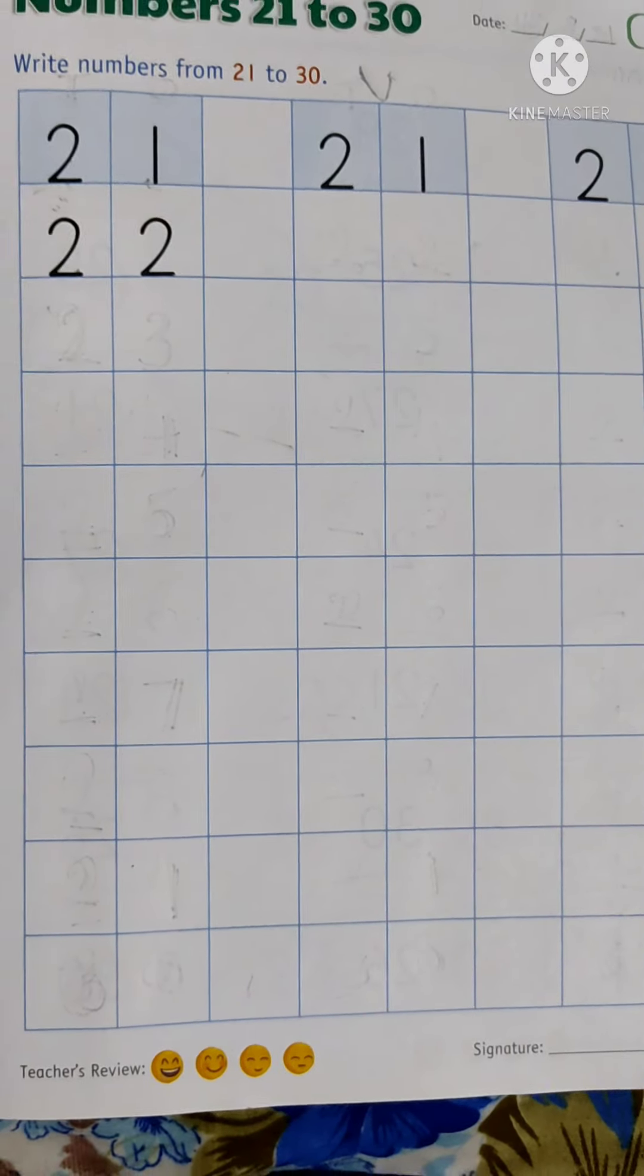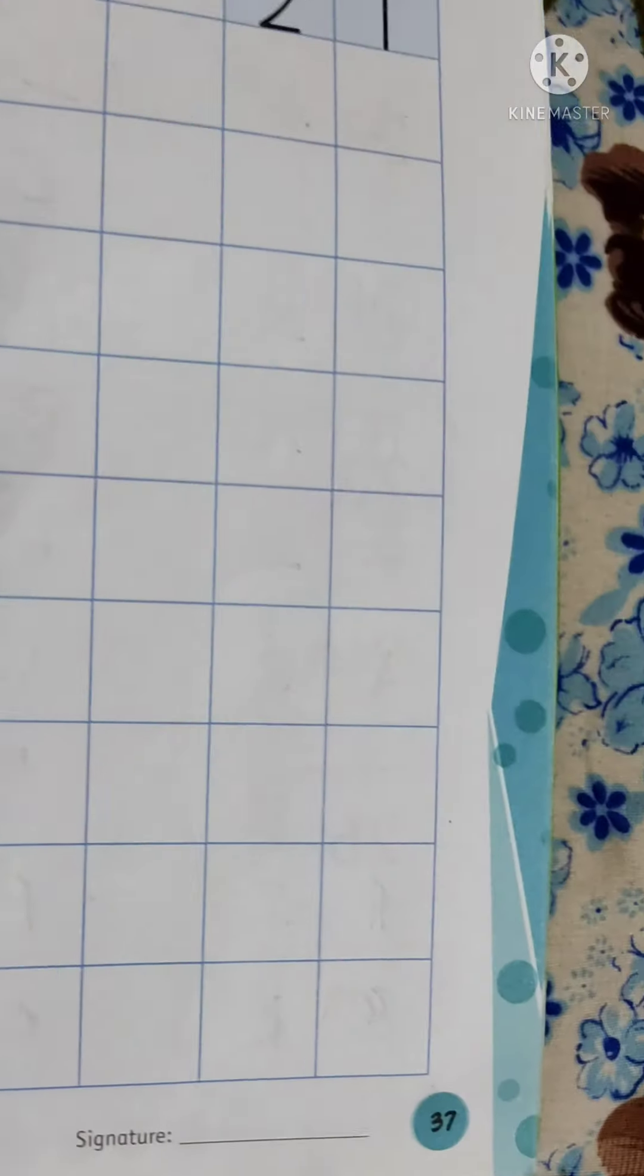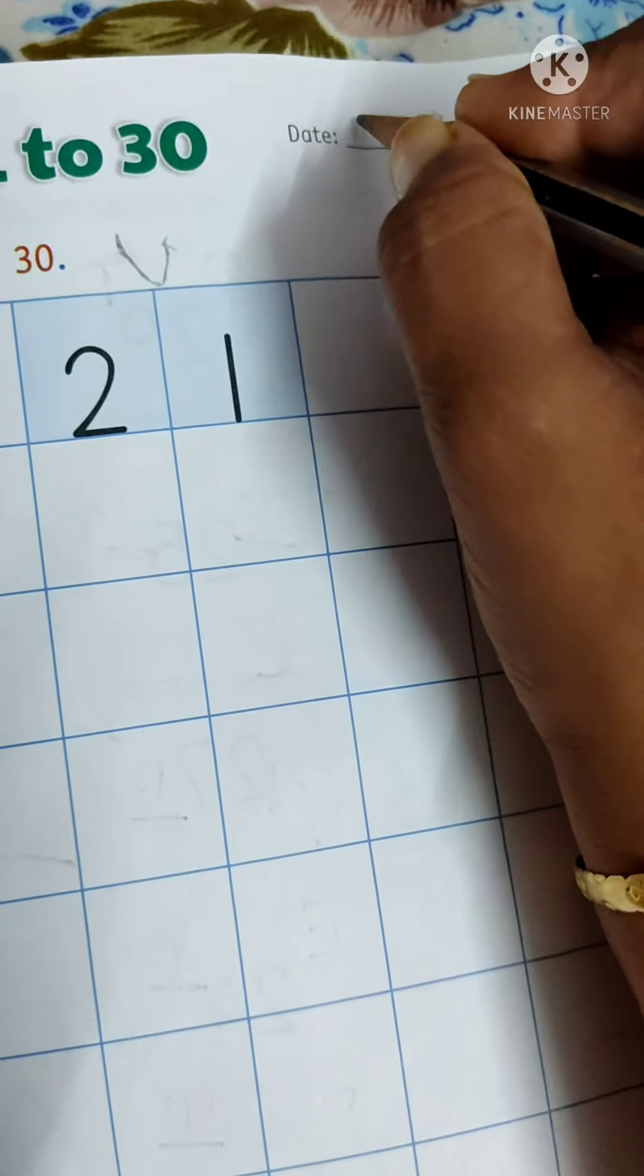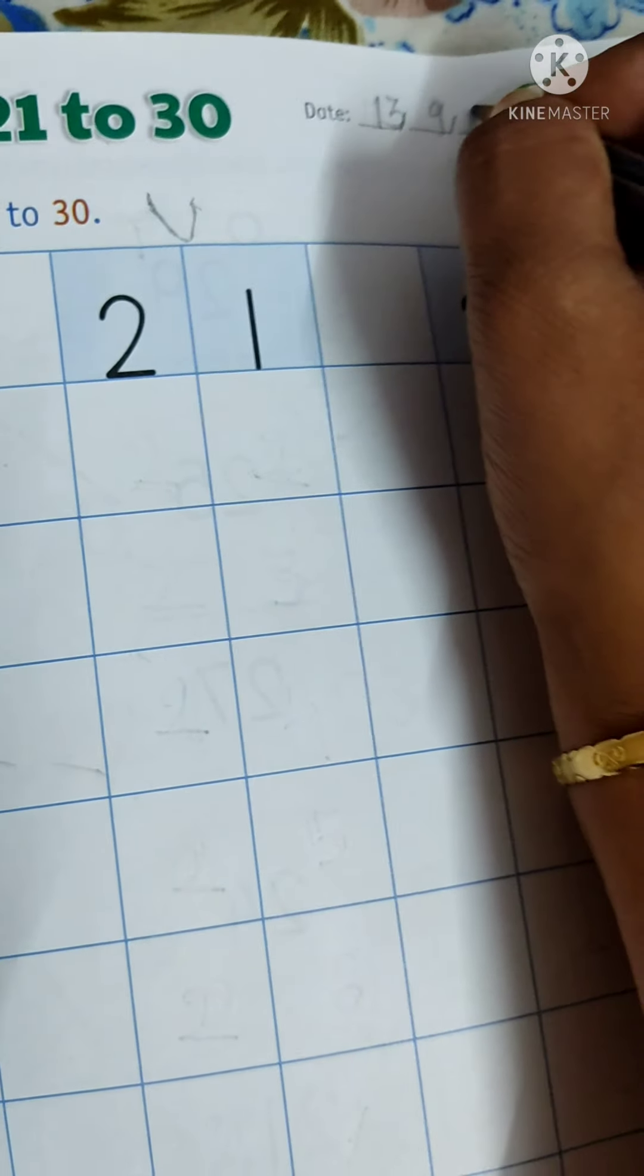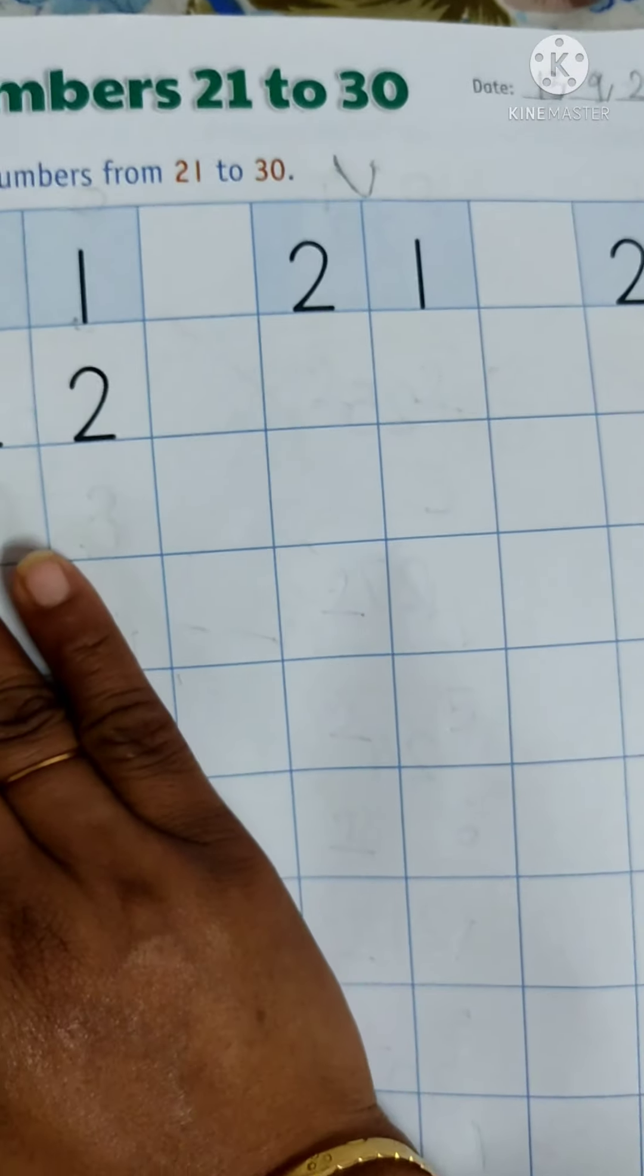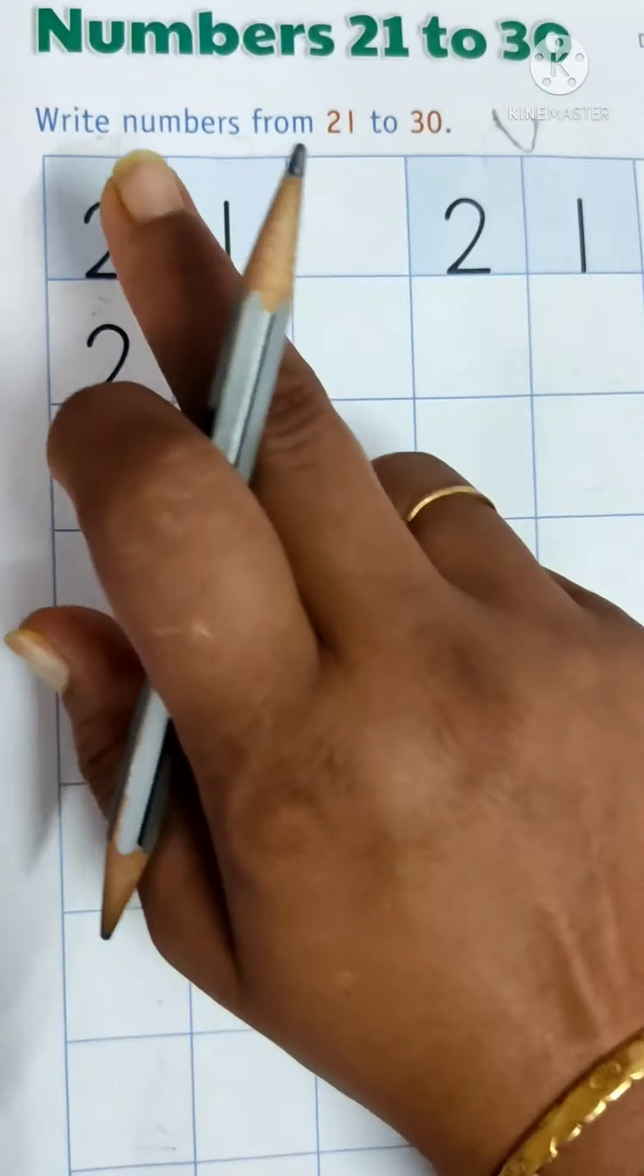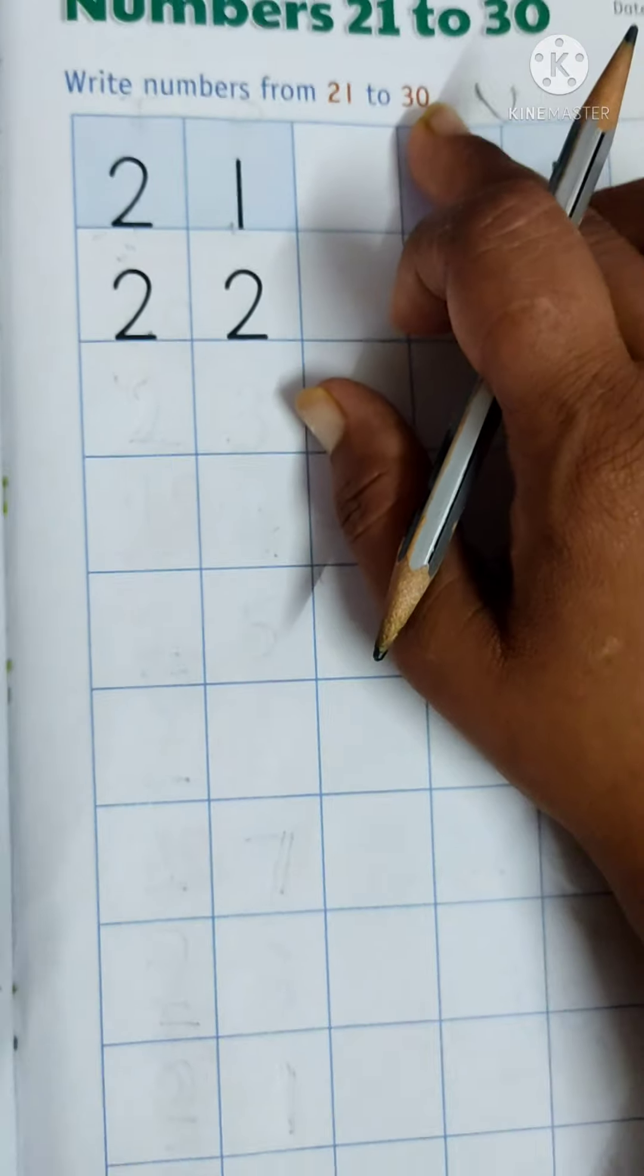Good morning kids, Jai Swaminaran. Book number 5, page number 37. Write today's day. The date is 13th September 21. Today we shall learn numbers 21 to 30. Write numbers from 21 to 30. Okay?